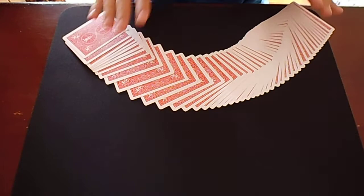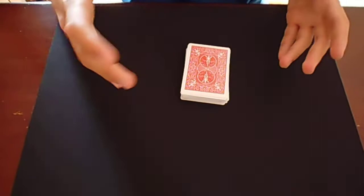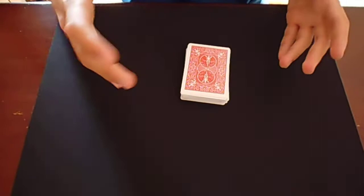For this we're going to be using a red deck of Bicycle playing cards. This deck has a story and the story is that Dai Vernon, a really well-known magician,